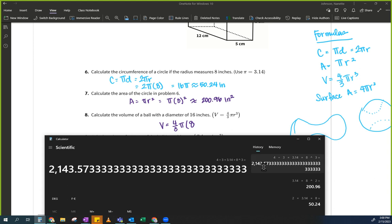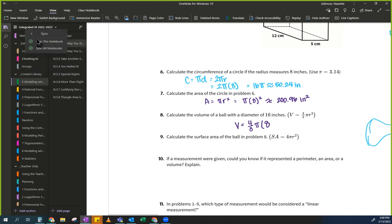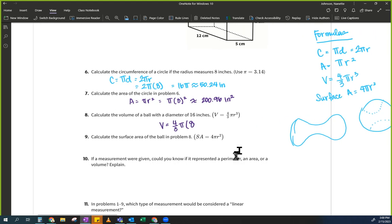Dun, dun, dun. And there's my answer. It's about 2,143.57 inches cubed. Inches cubed. Okay. So that should be showing up.